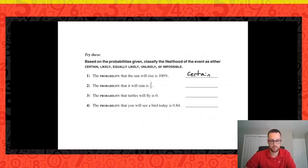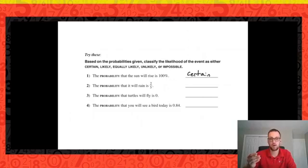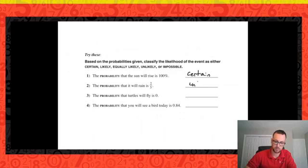The probability that it will rain is 2 out of 5 — two-fifths probability that it's going to rain. On our scale, we need to know whether 2 fifths is more or less than one half. It's less than one half. So knowing our definitions, that means it's going to be unlikely that it will rain tomorrow. It's not impossible — not 0% — but it's not very likely at two-fifths.